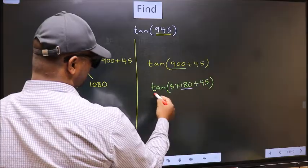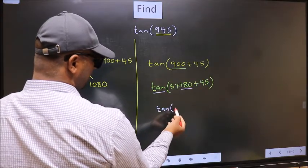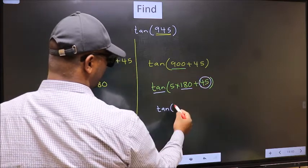Next, here we have 180. So tan is not going to change. It will remain tan. And inside, we get this angle 45.